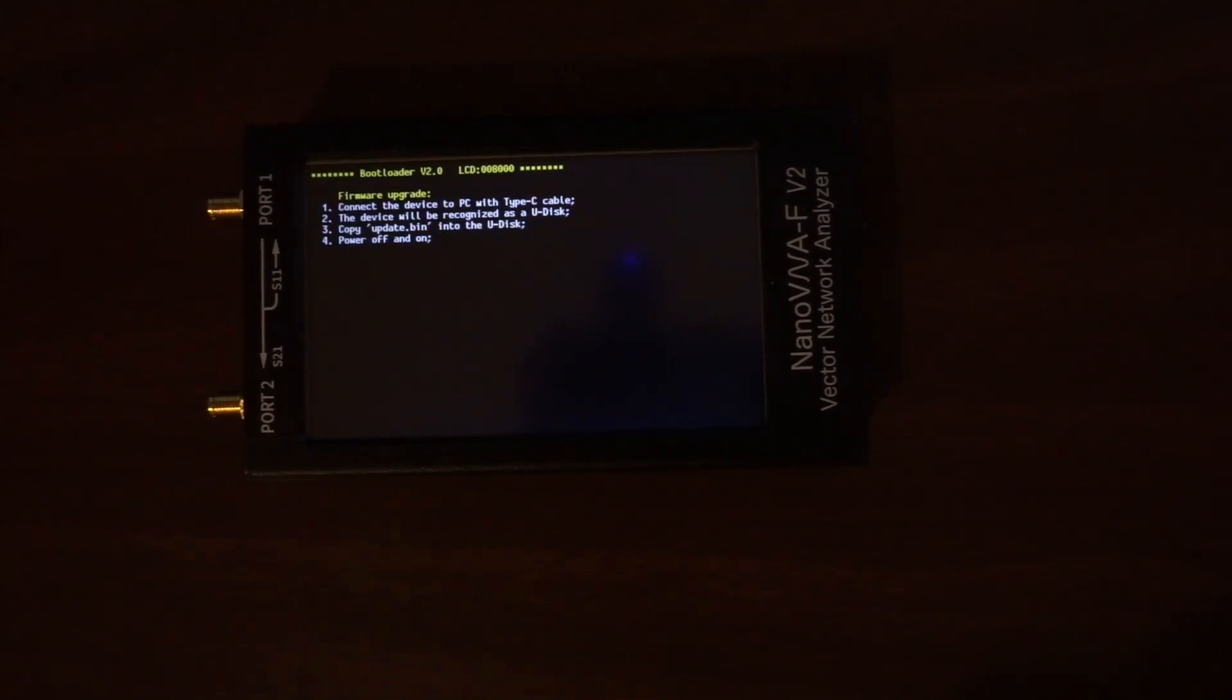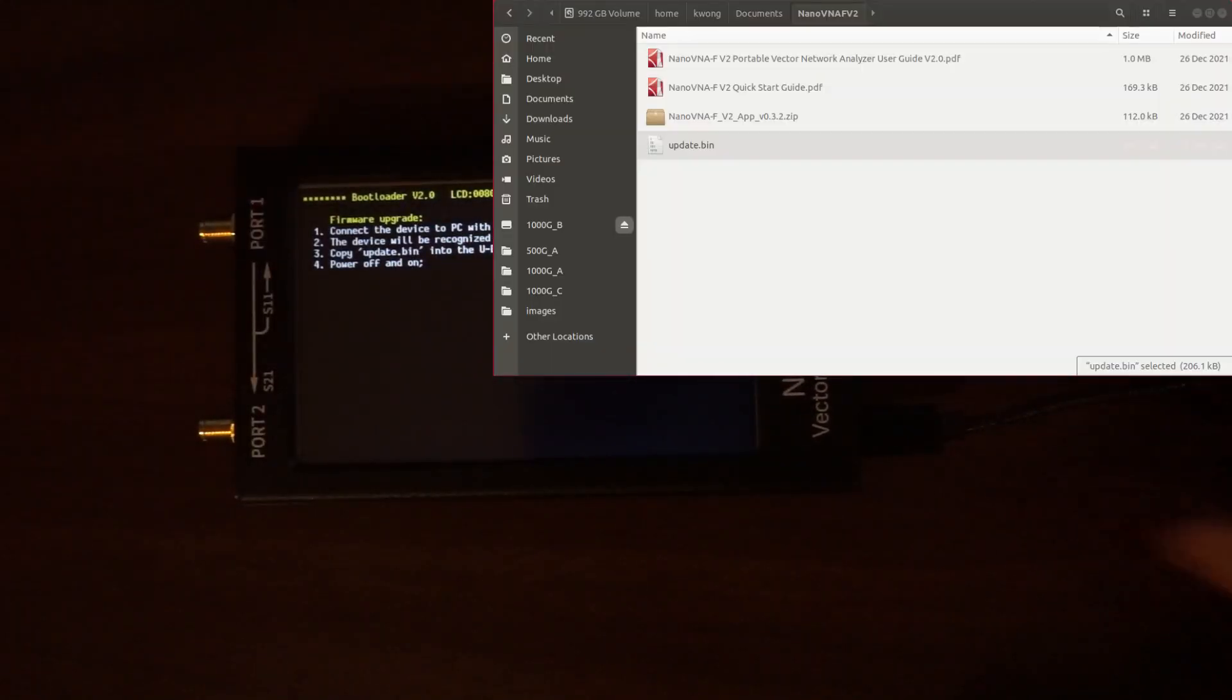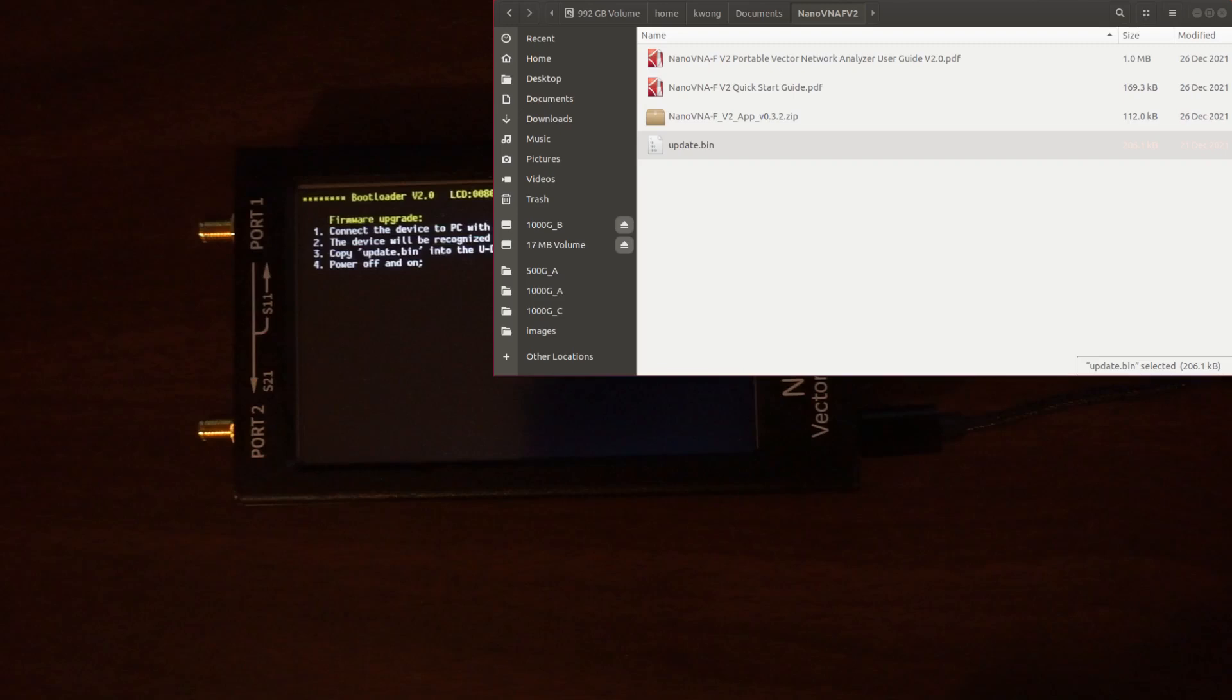After entering bootloader mode, I plug in the cable here - this is a USB-C cable. You should see a flash drive appear on the computer. I had already downloaded the NanoVNA's latest firmware from SysJoin's website, that's the 0.3.2.zip file.